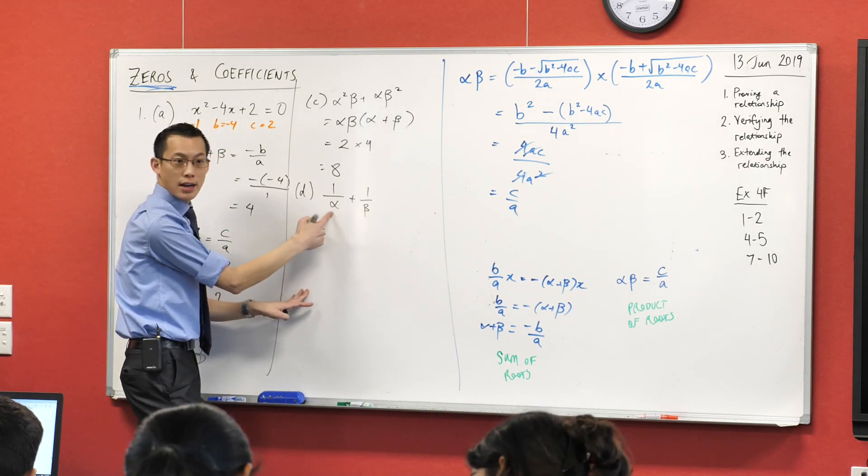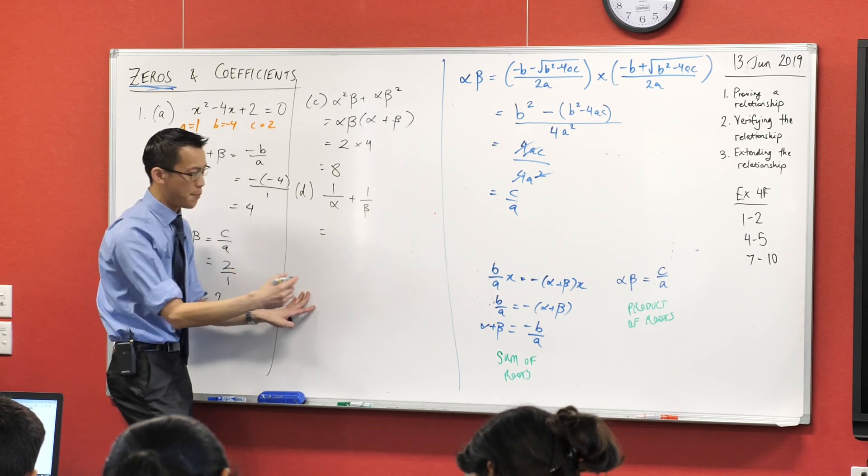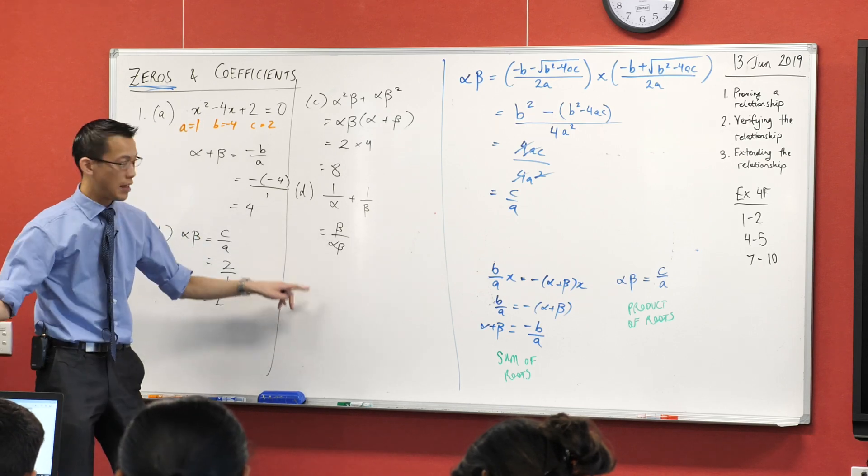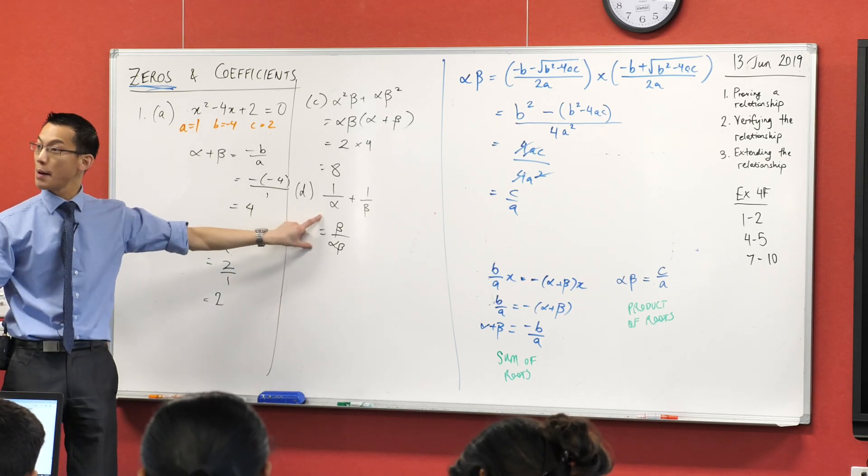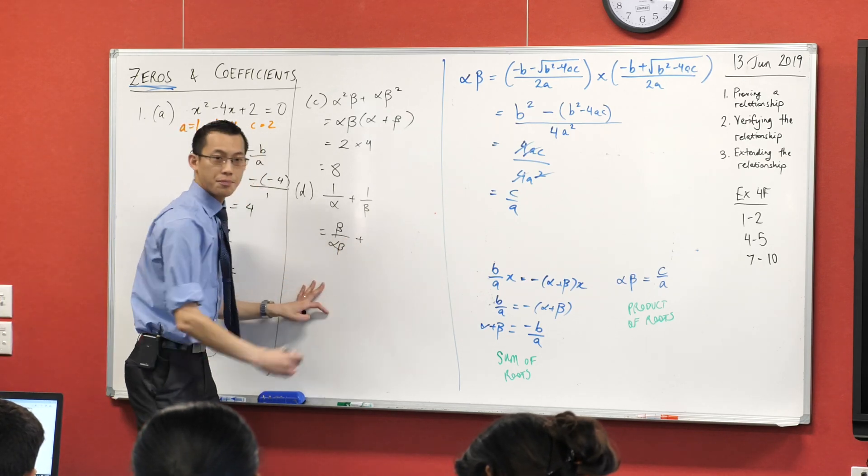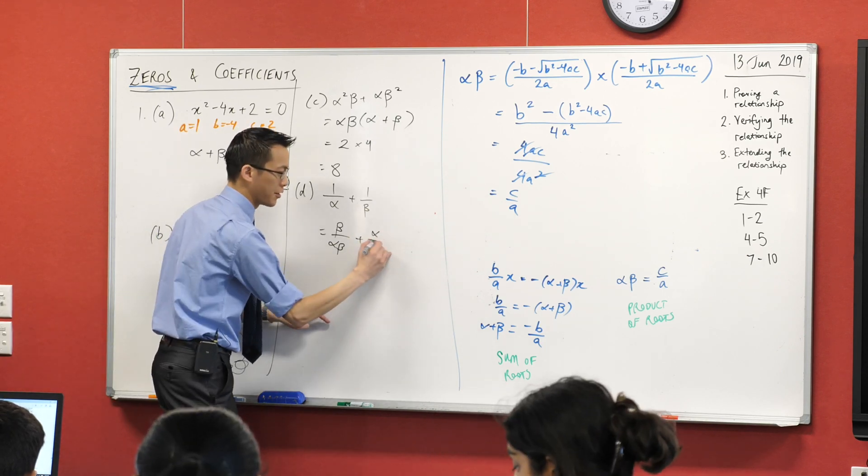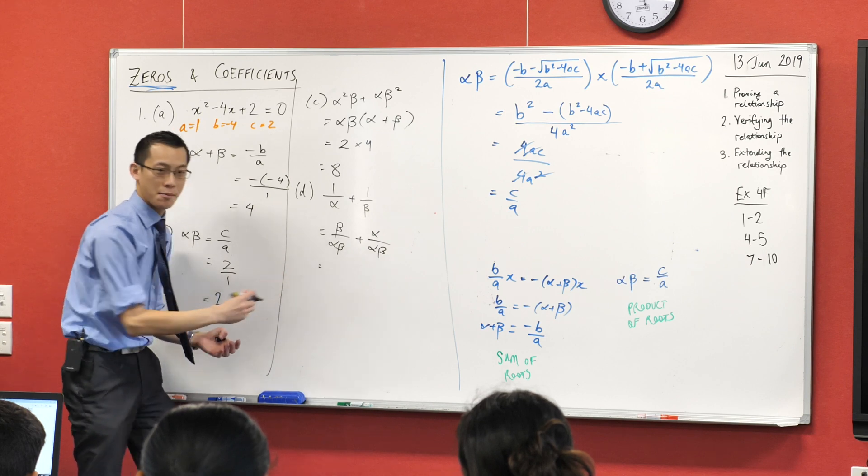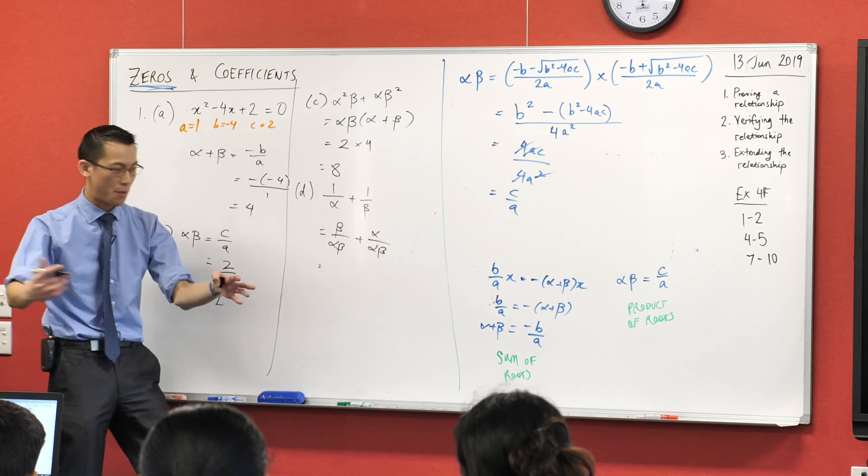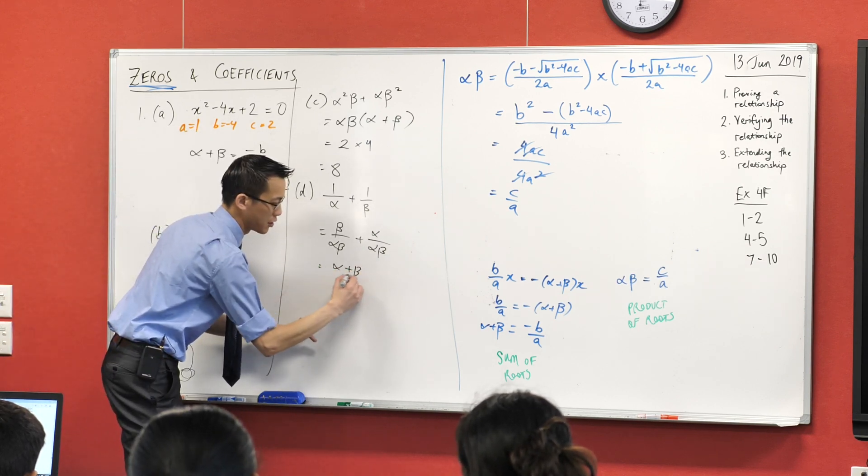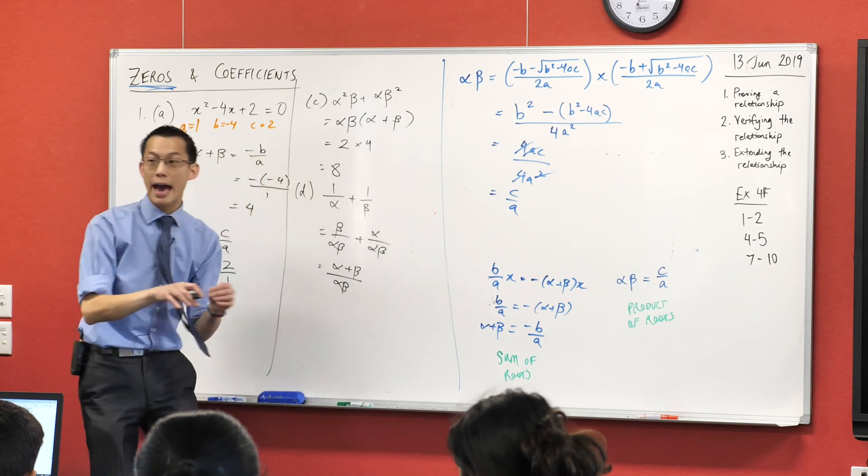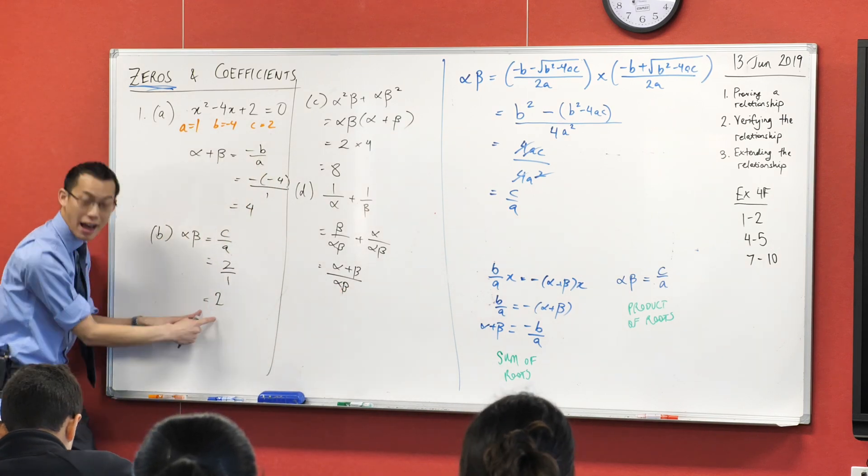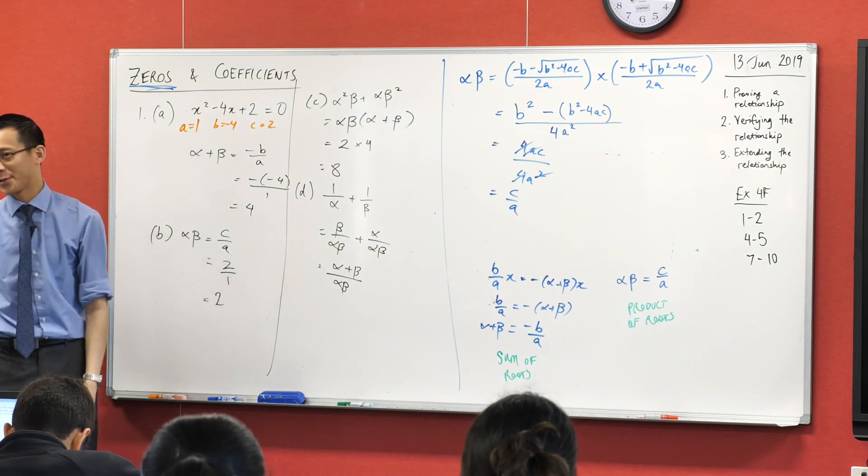Watch. I'm going to turn this guy into something with a denominator of alpha beta. It would be beta on alpha beta. I've just multiplied the top and bottom by beta. What about the next one? Alpha and alpha beta. Very good. Once you've got this, you're pretty much there, aren't you? Because you can combine these two fractions now that they're on a common denominator, alpha plus beta on the top, alpha beta on the bottom, and off you go. You know what alpha plus beta is. You know what alpha times beta is, and then you've got some answers.